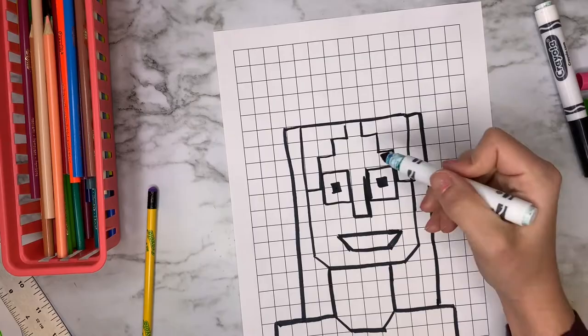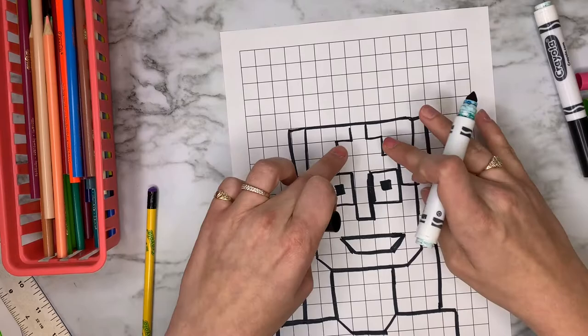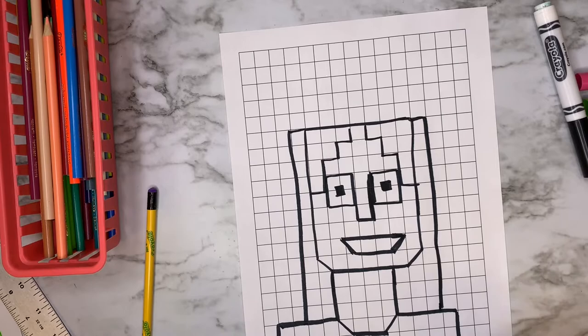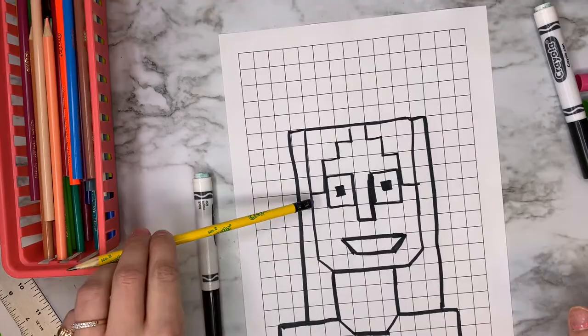So now I have my person. So you should have your hair, your eyes, your nose, your mouth, your neck, and your shoulders. And if you made any mistakes, just remember you're using a pencil, so you can go ahead and erase those.